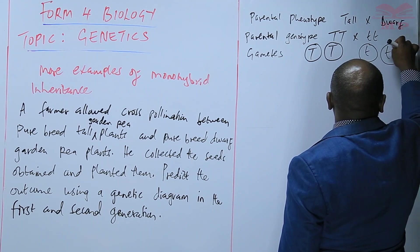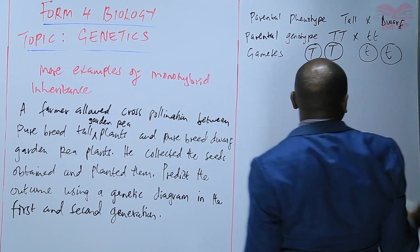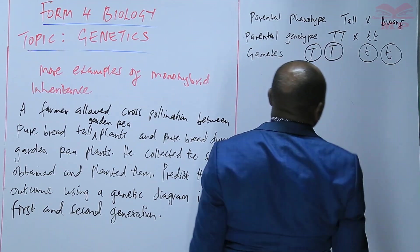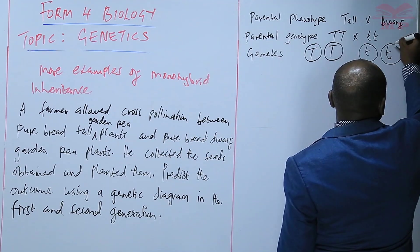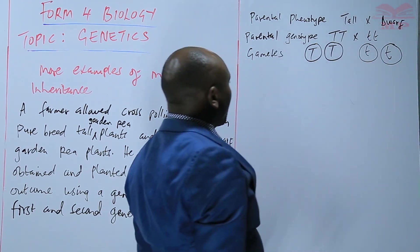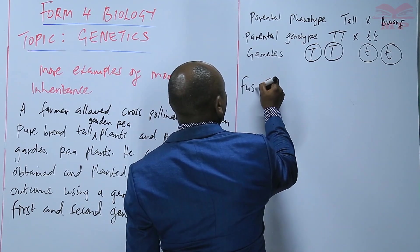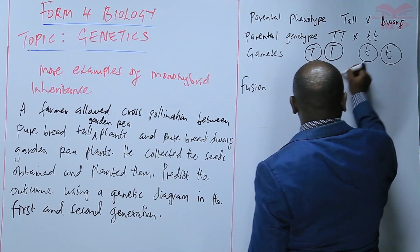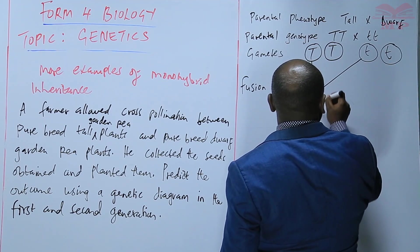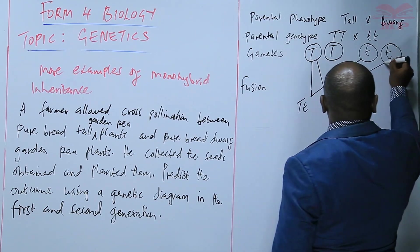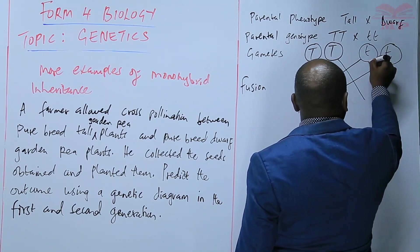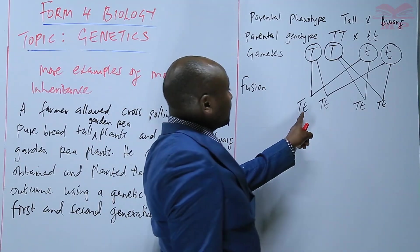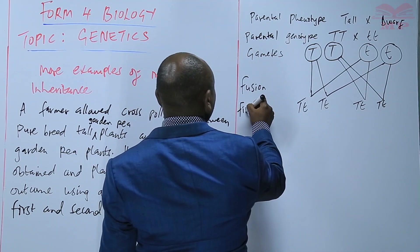The gametes should be circled by a complete circle, not a punctured one. Then we show the fusion. The first gamete fuses with the first gamete on the other side, and the first with the second on the other side. This is the F1 generation, the first filial generation genotype.